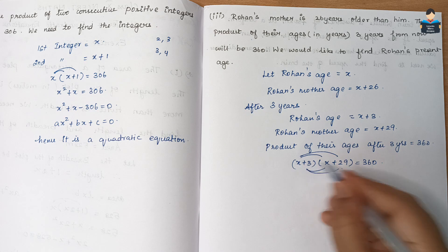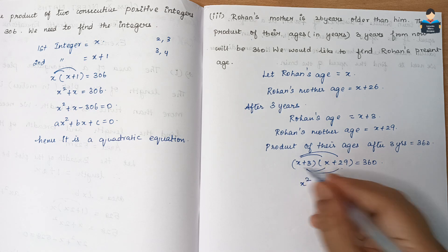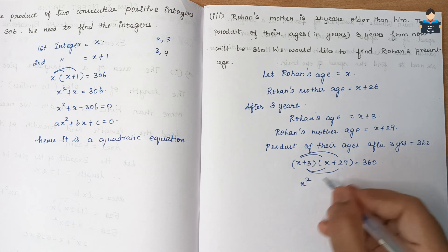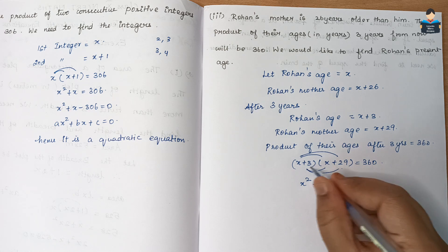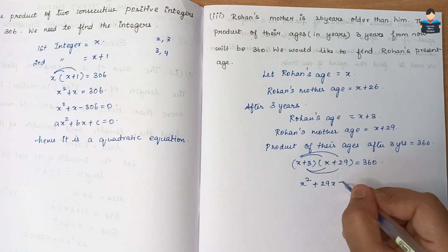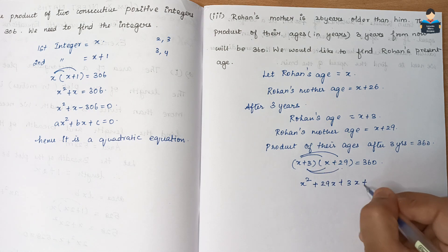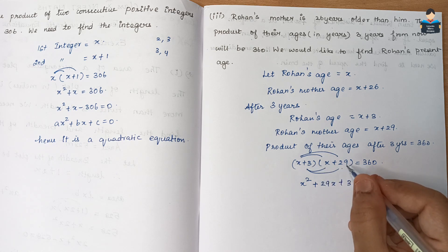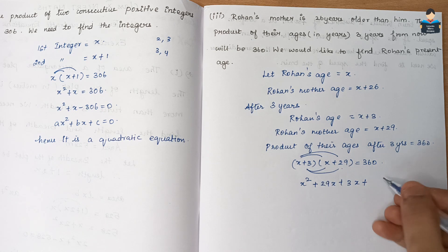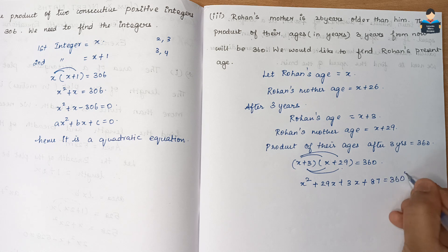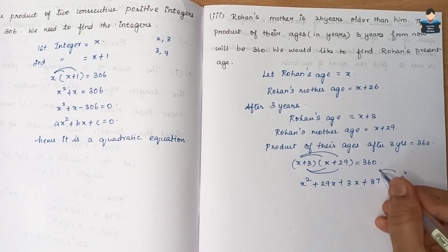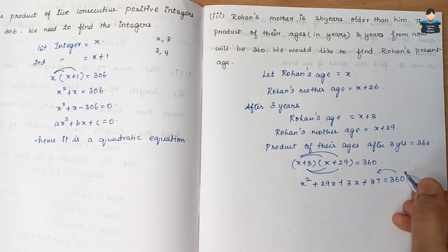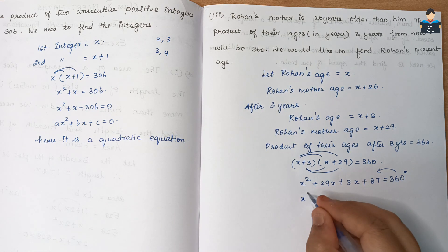Multiplying: x·x = x², x·29 = 29x, 3·x = 3x, 3·29 = 87. So x² + 29x + 3x + 87 = 360. Combining like terms: x² + 32x + 87 = 360.